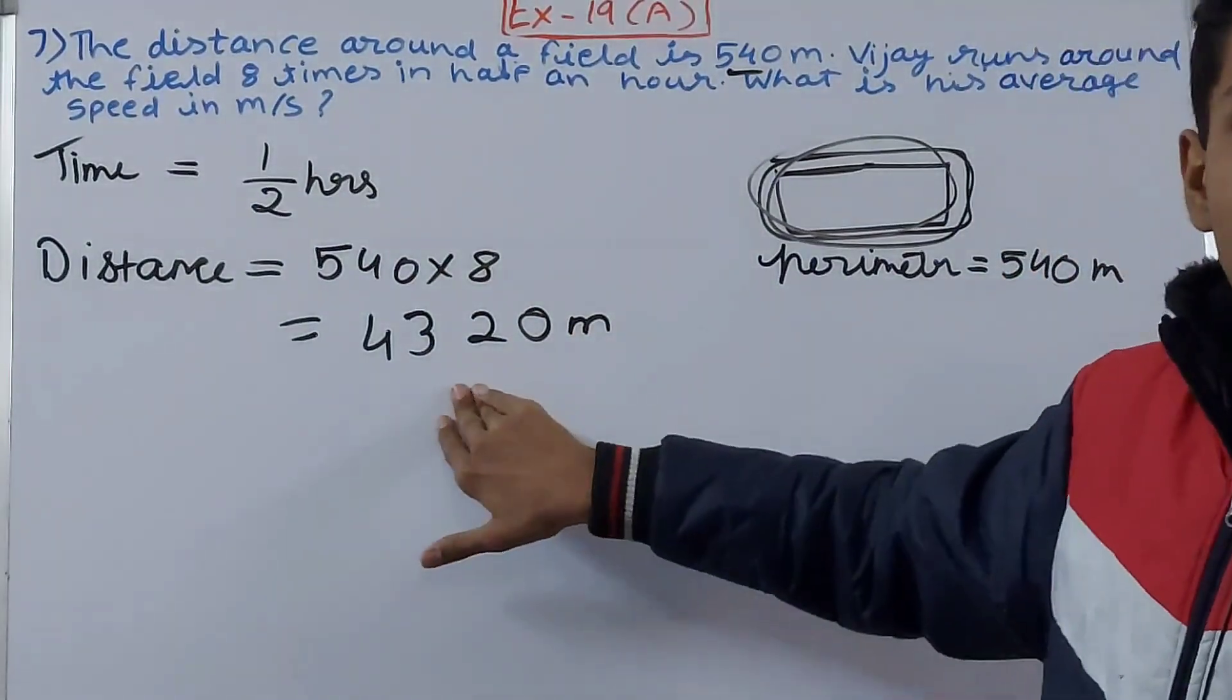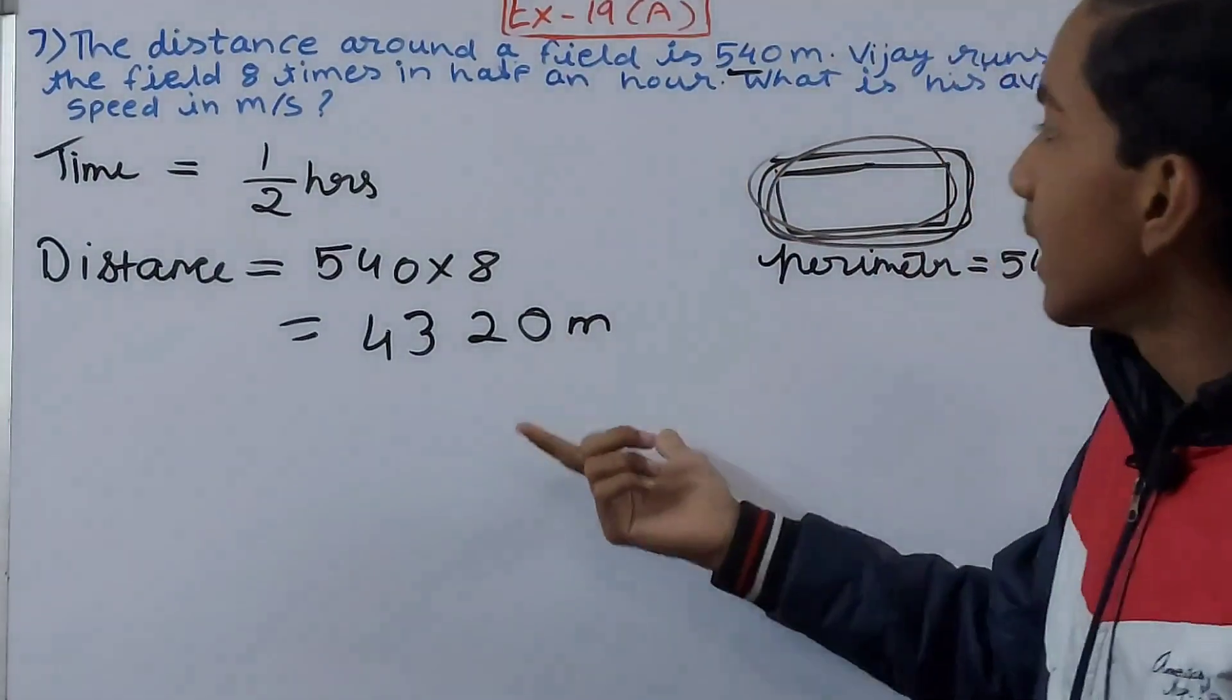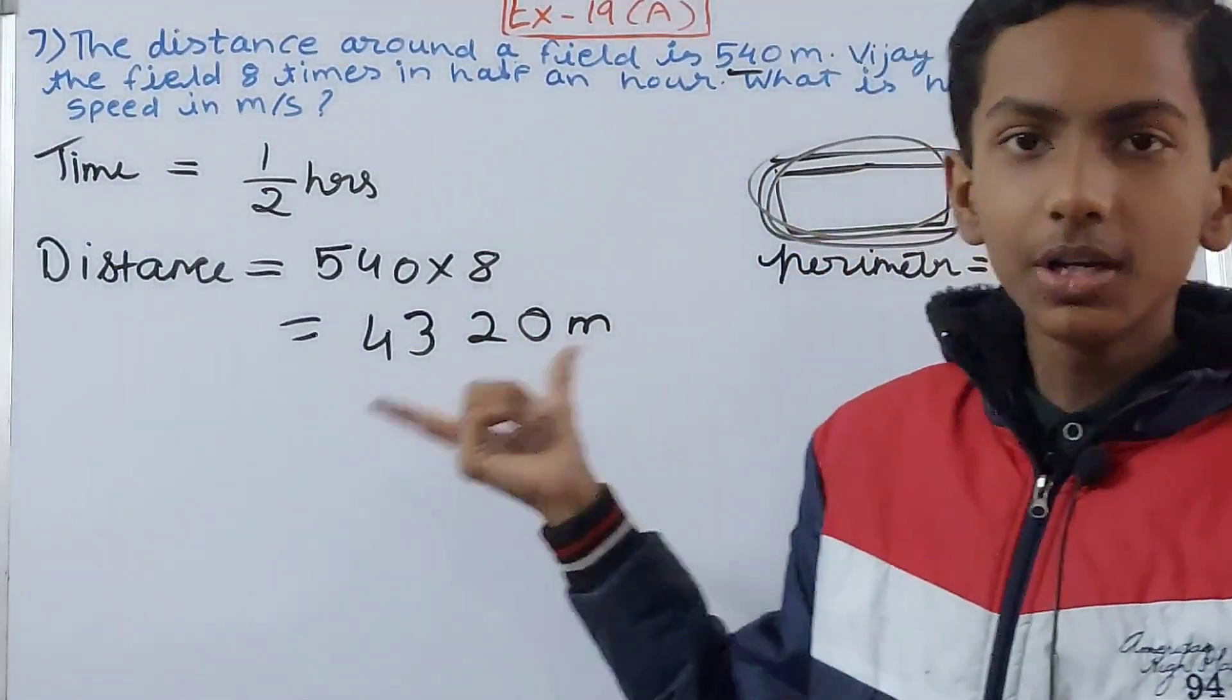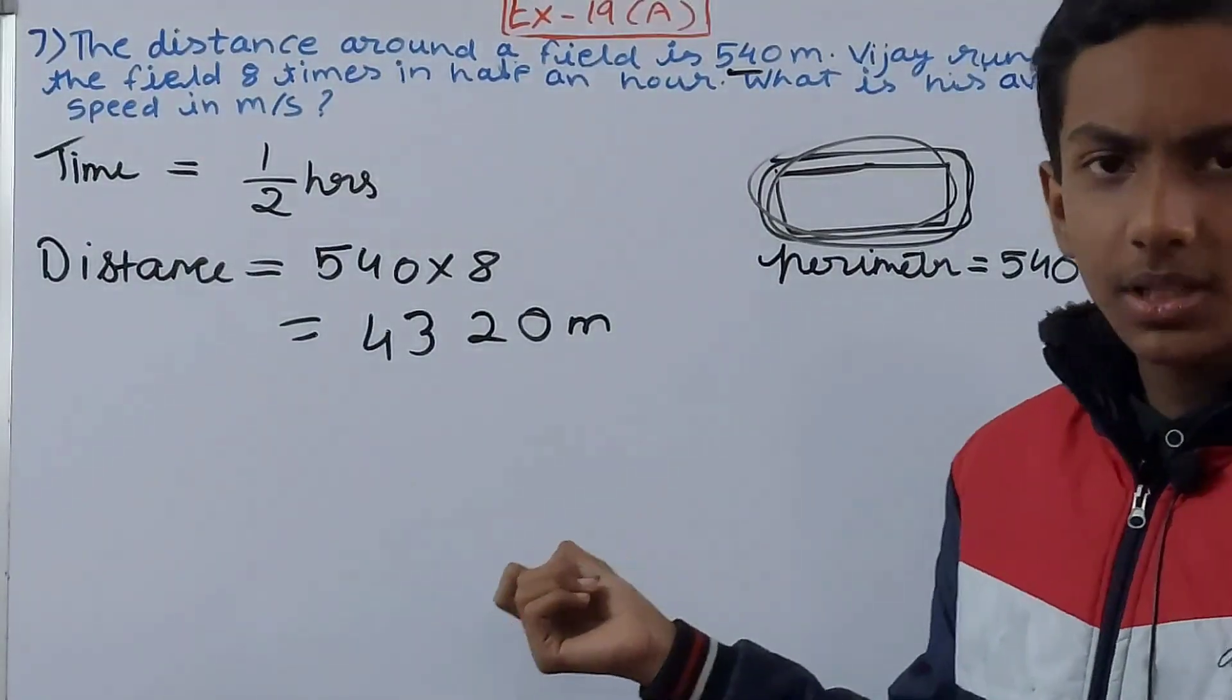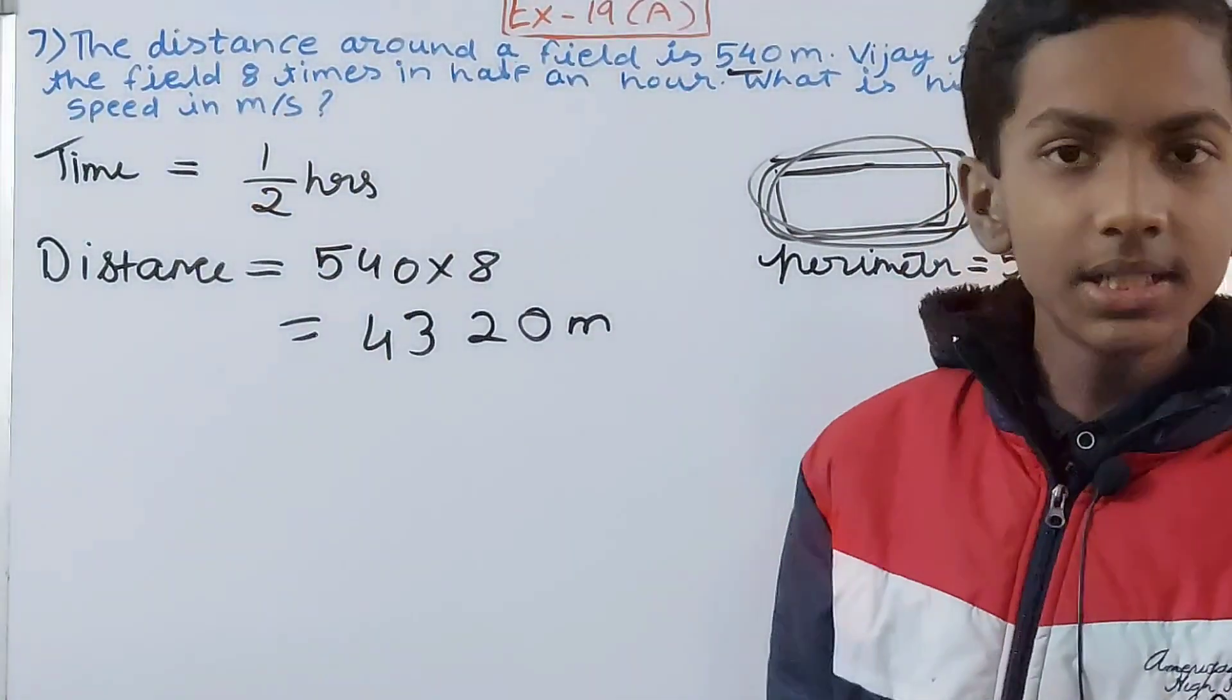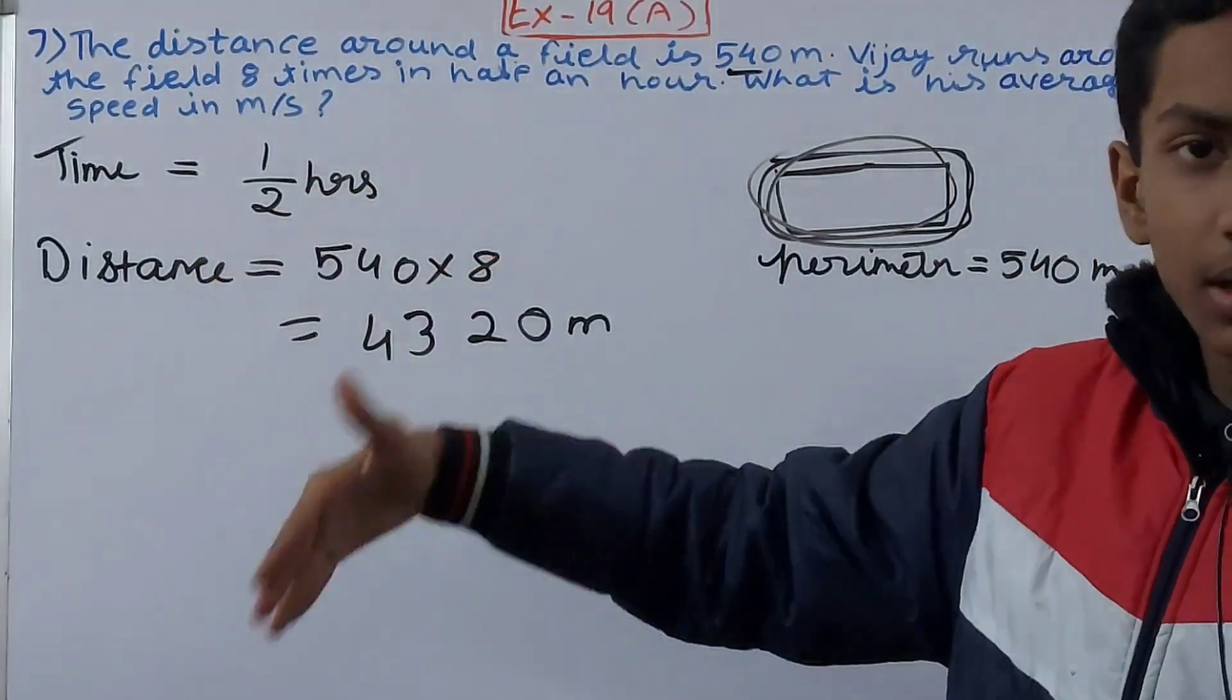The distance is in meters. Now we need to do something here so that this distance, 4320 meters, will stay as it is. And the speed being asked is in meters per second, so what do we do here? Now we convert this hours into seconds.